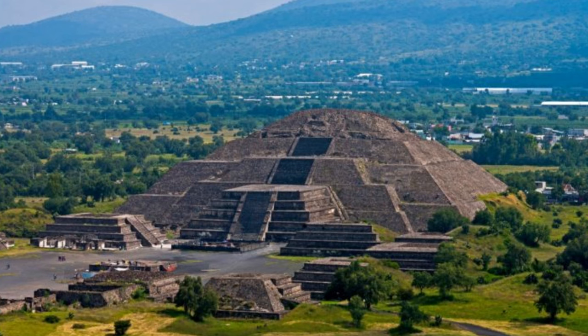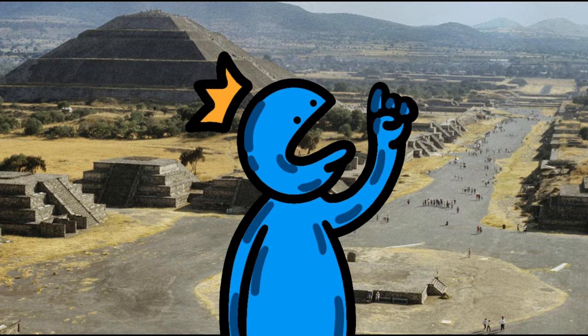Wonder number five, The Pyramid of the Sun. Being built around 100 CE and 200 CE, it was part of the ancient city of Tiho Hiokan.